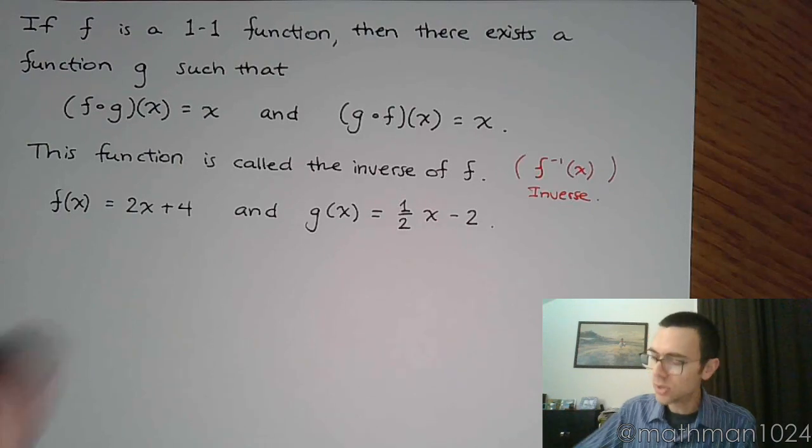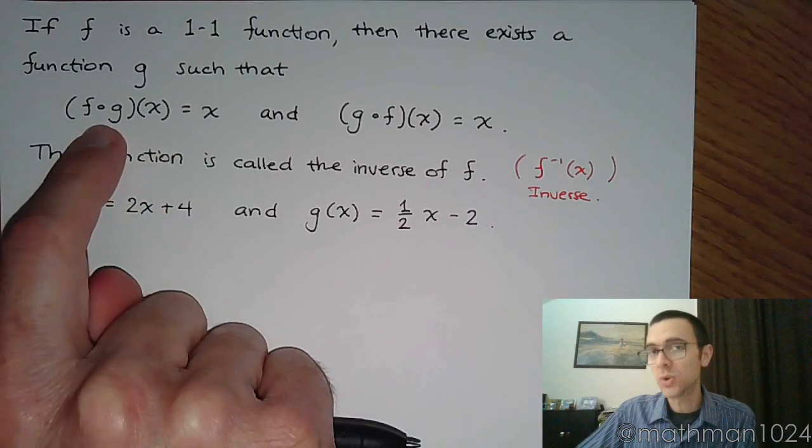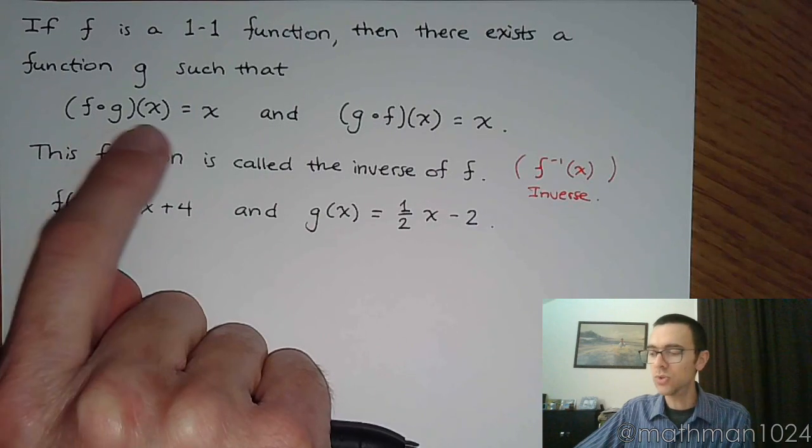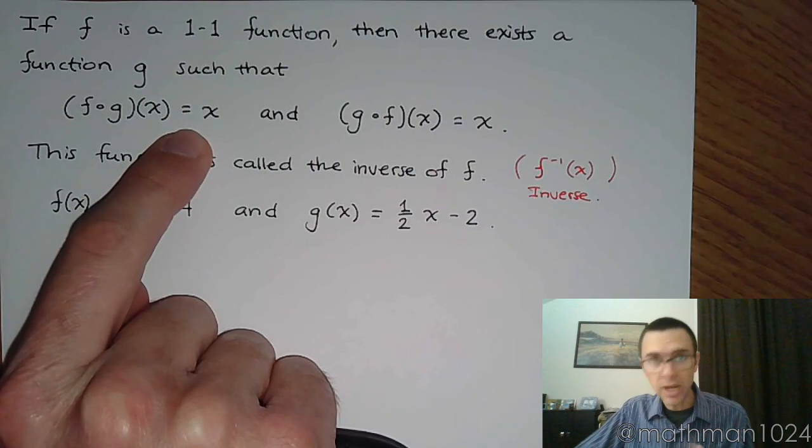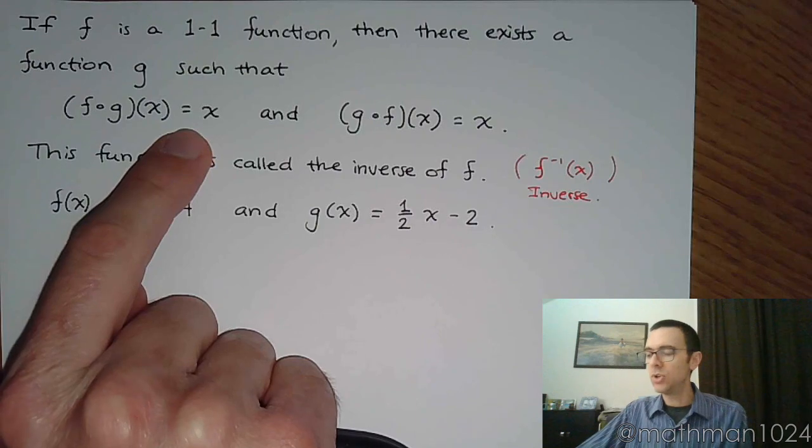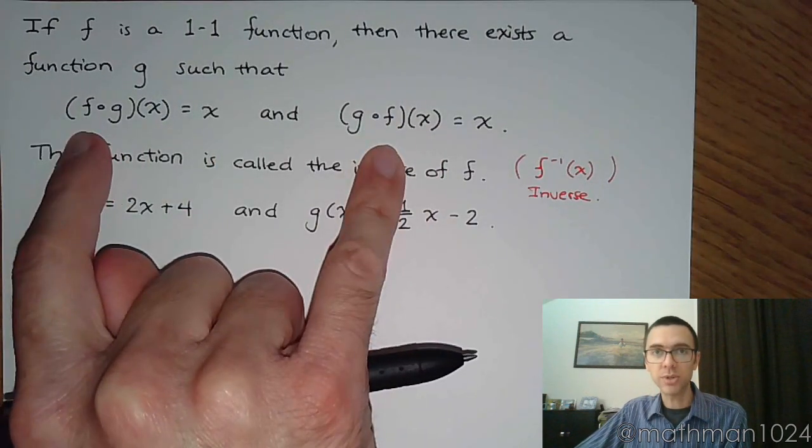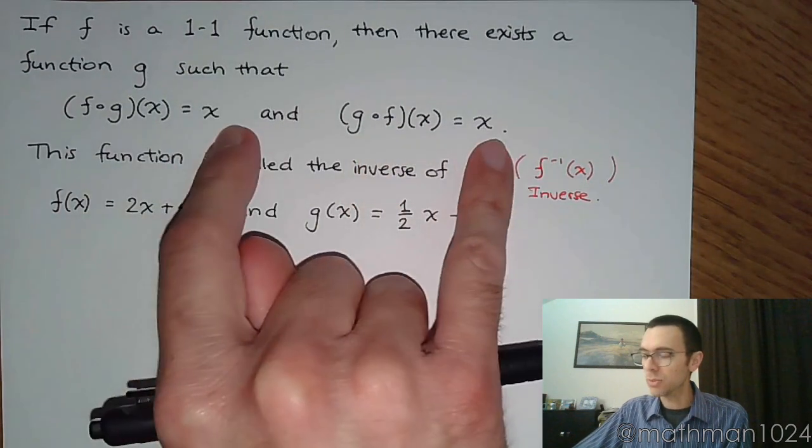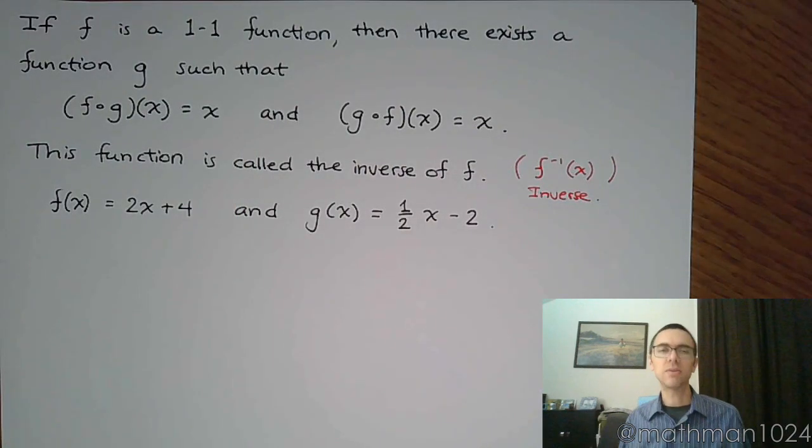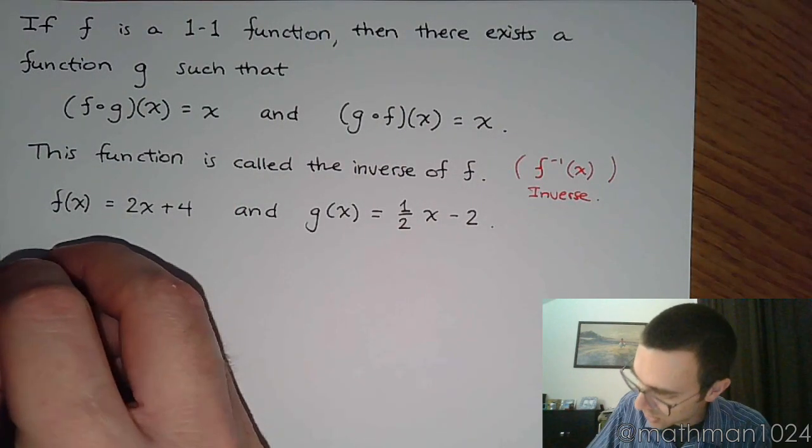Determine whether they are inverses of each other or not. What you're doing is you're going to do these operations. You're going to do the function composition to make sure that you get x out, just x, nothing else. And if you do the composition the two different ways that are presented here, and the results are both x, then they are inverses of each other.